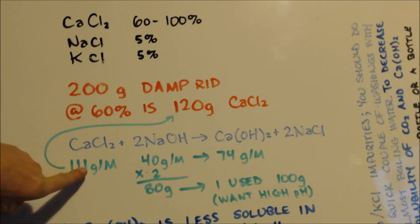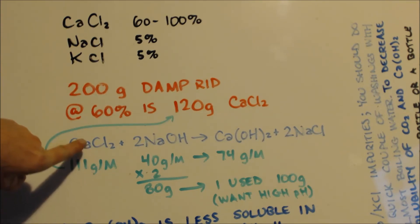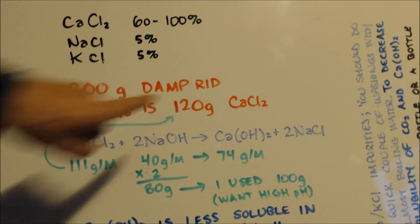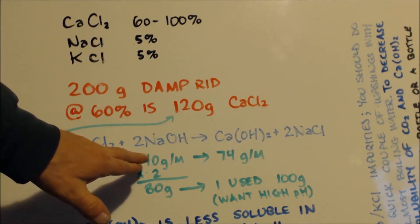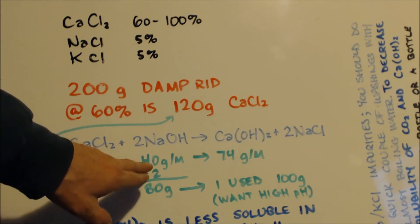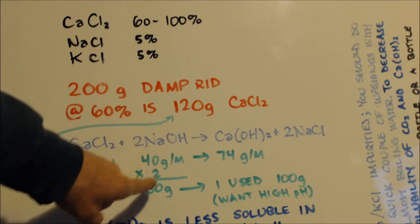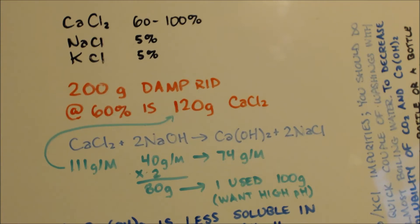Now, 111 grams is for a mole of calcium chloride, and we're saying there's 120 grams in there. That's a mole and 10% of a mole. So for the first mole we're going to double the NaOH and make 80 grams, and then we used 100 grams to put in that extra 10% and to make sure we want a high pH.